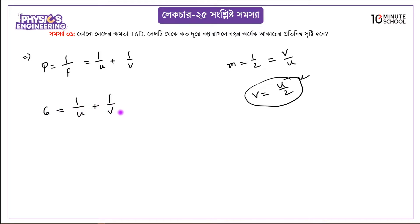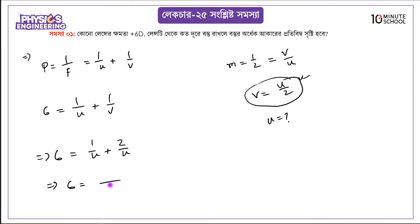So in the second category, replacing v, we get 1 over u plus 2 over u. That gives us 1 over f equals 3 over u, or u over 3. Then 3 over 6 equals one half — so f equals 0.5 meters. That's the SI unit result.